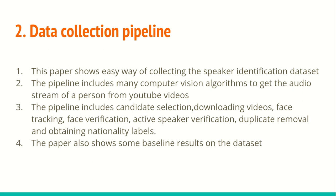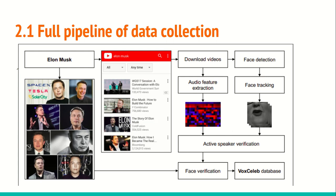After collecting the data, they also show some baseline results. You can visualize the full pipeline in this picture, which was actually put in the VoxCeleb1 paper — it's not in the VoxCeleb2 paper. I took this picture from VoxCeleb1 because it gives the overall idea of what they are doing to collect the speaker identification data.